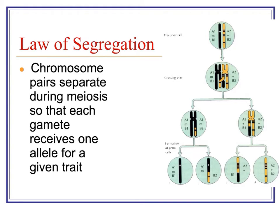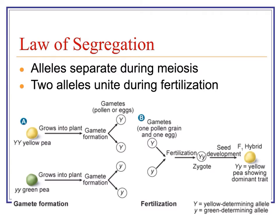Think back to meiosis — homologous chromosomes separate during the first division and chromatids separate during the second division, so you end up with one chromosome from each original pair in the gametes. Tying this to fertilization and Mendel's experiment: the homozygous dominant yellow pea and homozygous recessive green pea produce gametes that each carry only one allele type — big Y or little y. During fertilization those combine to form the zygote, which is now heterozygous. It has one dominant yellow allele and one recessive green allele, so all plants in the F1 generation were heterozygous.